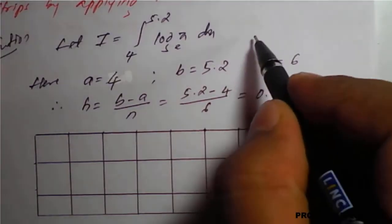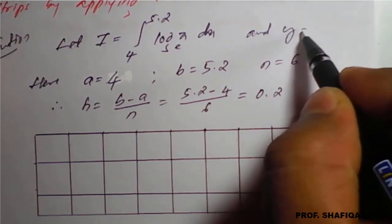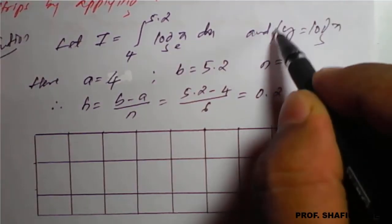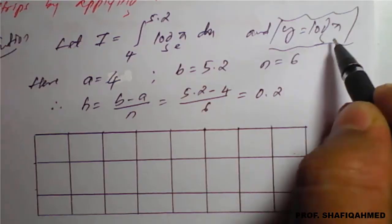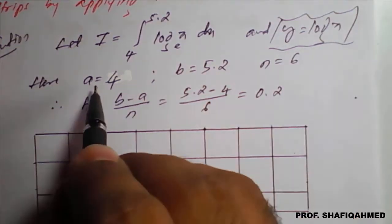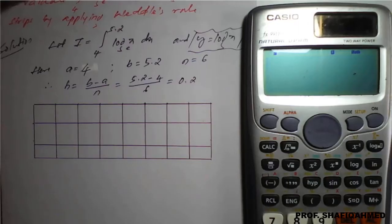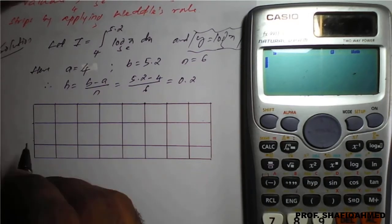We need to identify the value of y. Y equals log of x. You have to take y equals log x, along with the a, b, and h values. Let's see the table now.